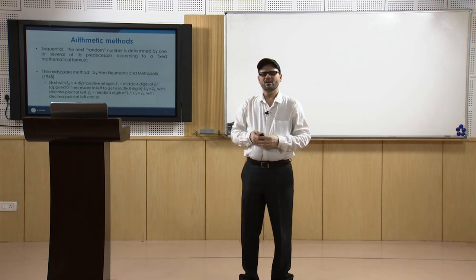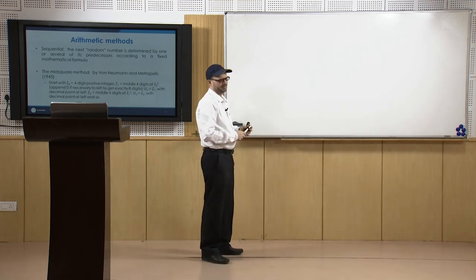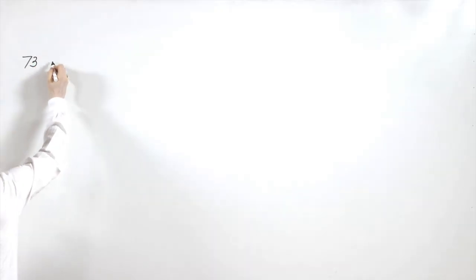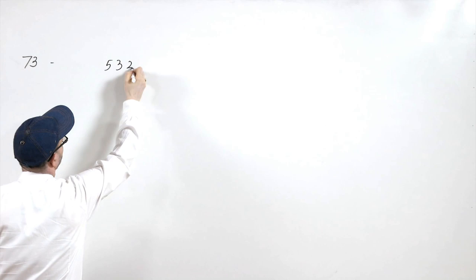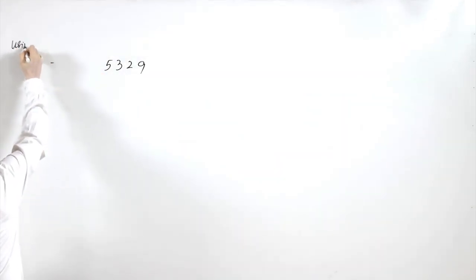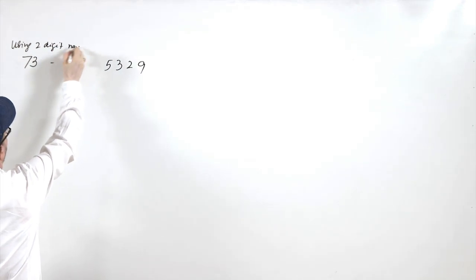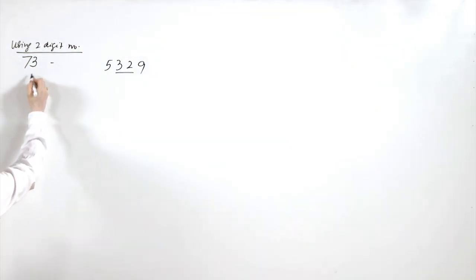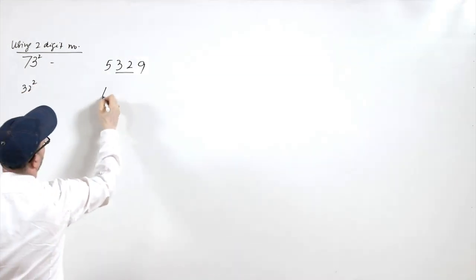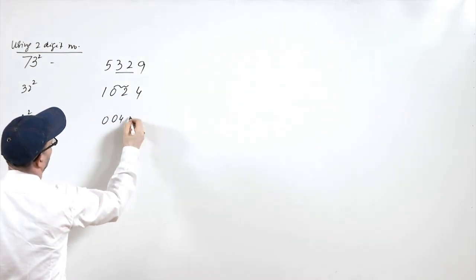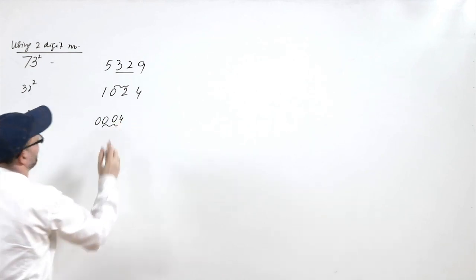For example, using a 2-digit number: starting with 73, 73² = 5329. Taking the middle 2 digits gives 32. Then 32² = 1024, middle digits give 02. Then 2² = 04. This way it is basically vanishing — the sequence degenerates very early.